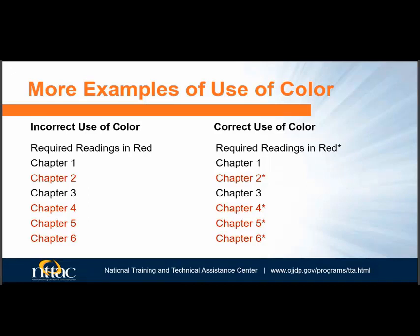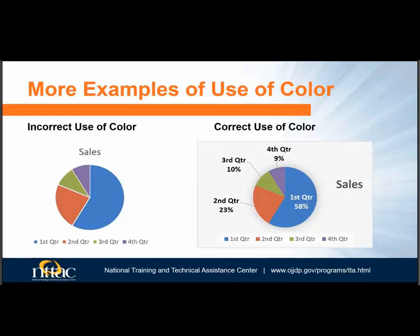Asterisks are often used when indicating required form fields. Someone who cannot distinguish colors can see that chapters 2, 4, 5, and 6 are required because they also include asterisks. The chart on the left only uses color to indicate the amount of sales during each quarter, whereas the chart on the right includes the quarters and percentages of sales during each quarter.